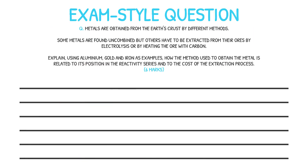Here's an example of a past paper question you can attempt to test your understanding. Metals are obtained from the earth's crust by different methods. Some metals are found uncombined, but others have to be extracted from their ores by electrolysis or by heating the ore with carbon. Using aluminium, gold, and iron as examples, explain how the method used to obtain the metal is related to its position in the reactivity series and to the cost of the extraction process. For this six-mark question, our answer must cover all areas highlighted to achieve full marks — we must discuss the positions of aluminium, iron, and gold in the reactivity series and how this relates to the cost to extract them.